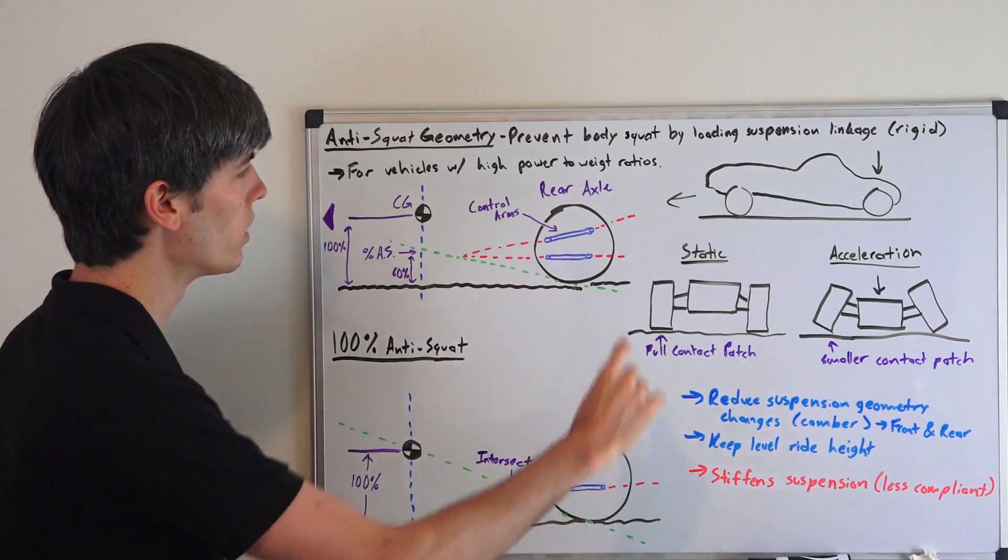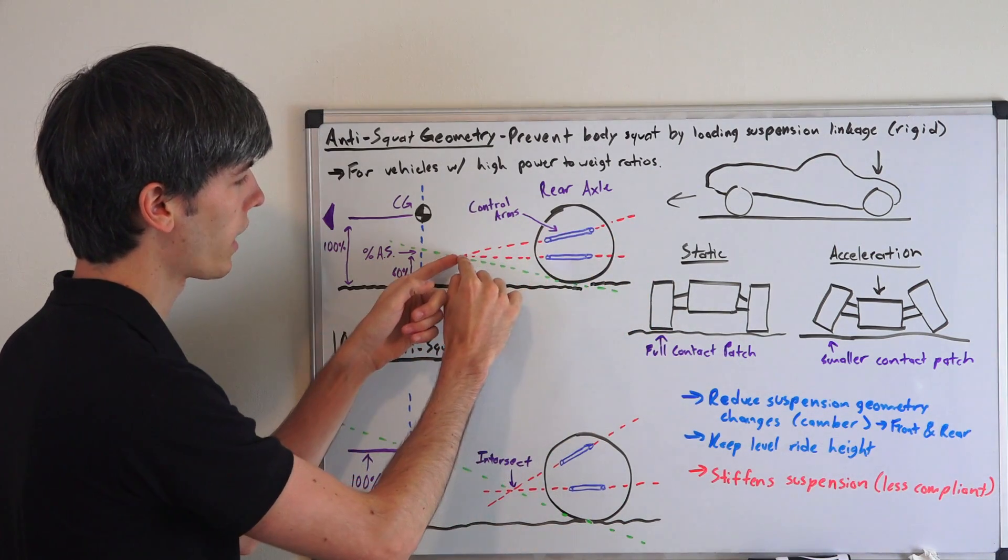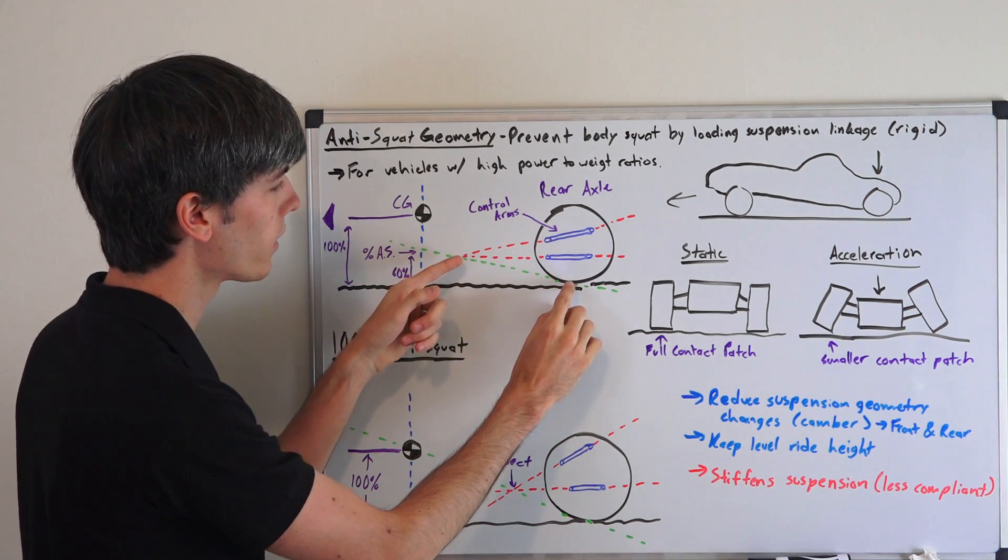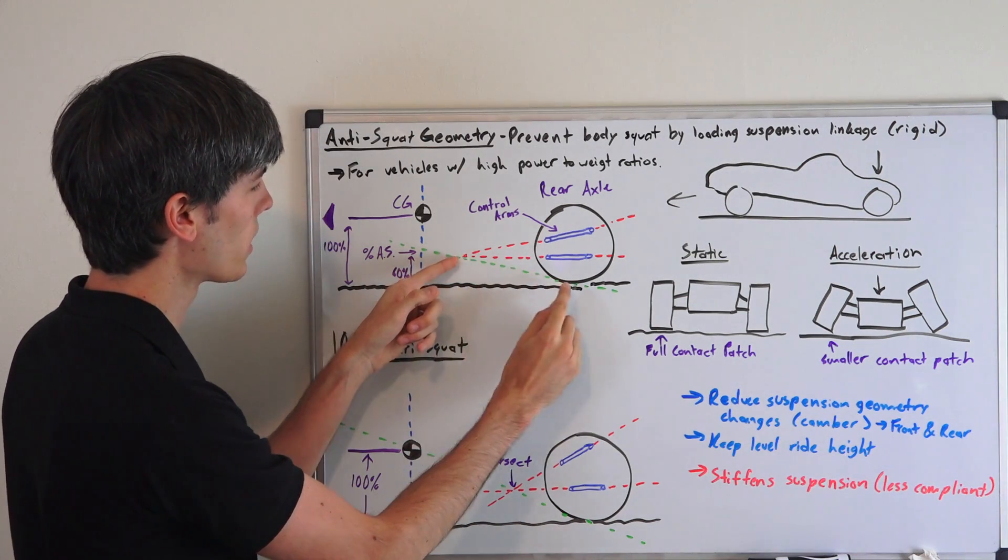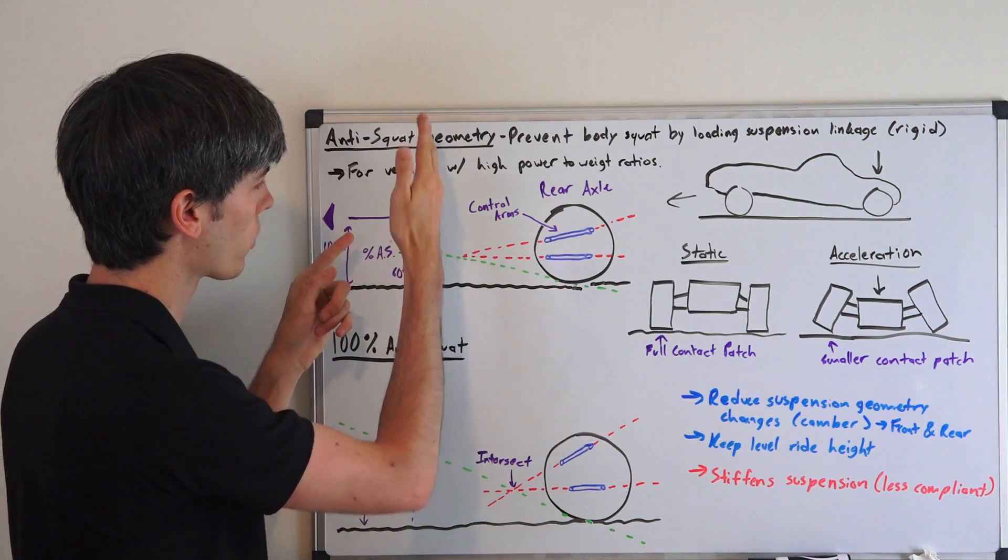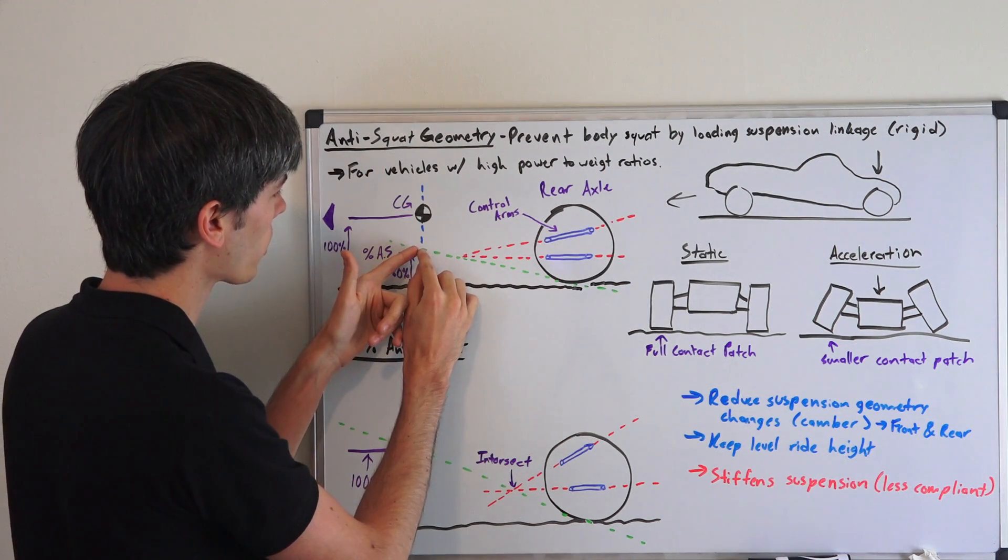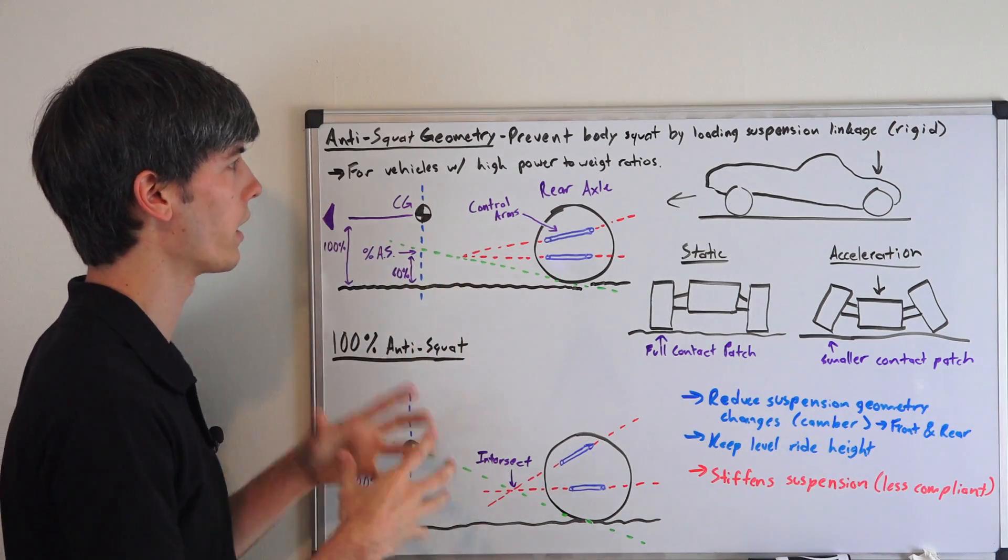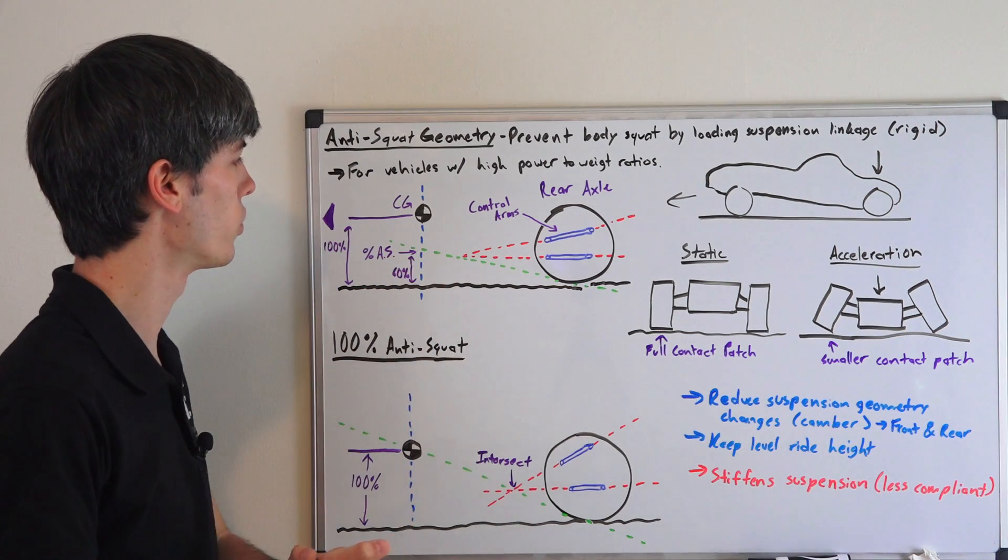What you want to do is you're going to have your suspension linkage and the point at which they intersect. If you draw a line connecting lower underneath the tire to that point and then extend that out to the center of gravity, the line bisecting the center of gravity of the vehicle, then essentially this point right here is going to tell you your percentage of anti-squat, just like it does with anti-dive geometry and very similar to roll centers.